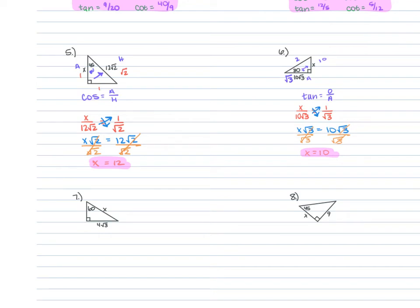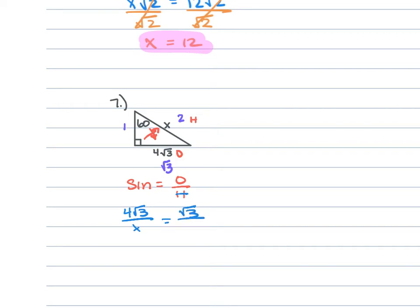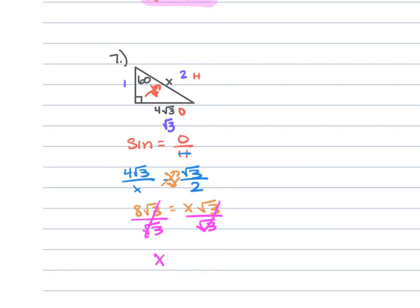For problem 7, another 30-60-90 triangle with side lengths 1, 2, square root of 3. We're working with opposite and hypotenuse, so sine equals opposite over hypotenuse. Our opposite is 4 square root 3 and hypotenuse is x. Setting up: 4√3 over x equals √3 over 2. Cross-multiplying gives 8√3 = x√3. Dividing each side by √3, x equals 8.